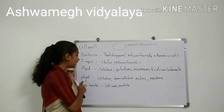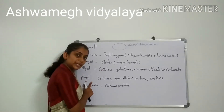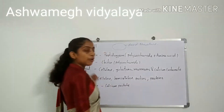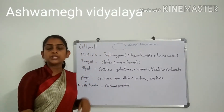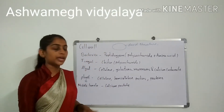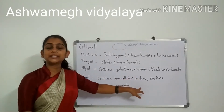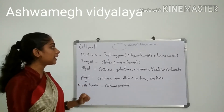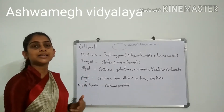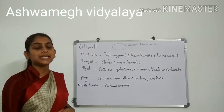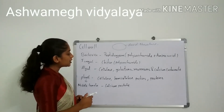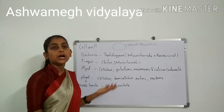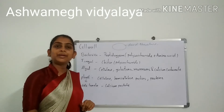Now we discuss about plants. Plant cell wall is made up of cellulose, hemicellulose, pectins, and proteins. The middle lamella of the plant cell wall is made up of cellulose and calcium pectate.